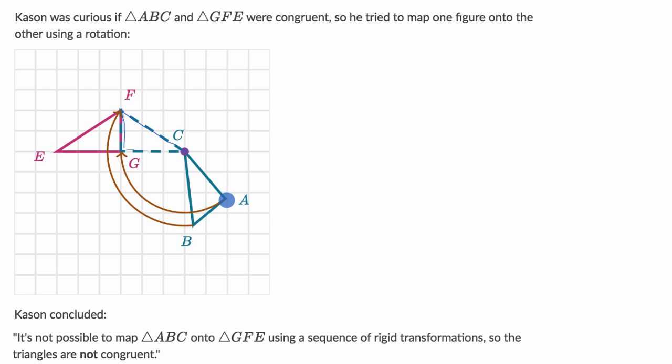So what I want you to do is pause this video and think about is Kassan correct? That they are not congruent because you cannot map triangle ABC onto triangle GFE with rigid transformations?